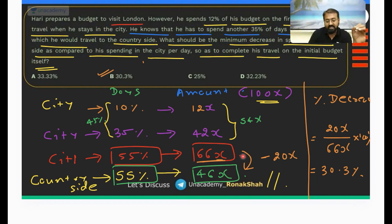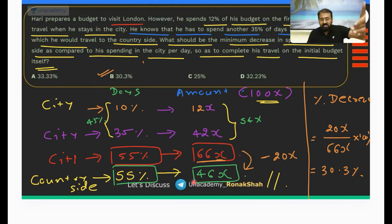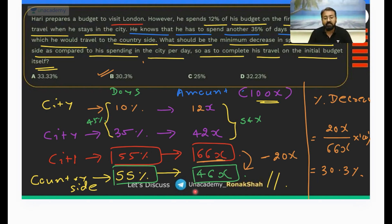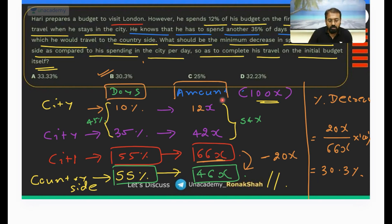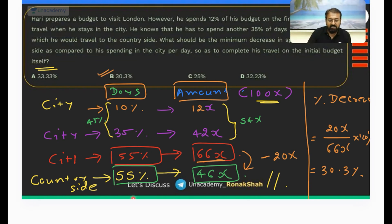For 55% of the days in the city he would need to spend 66x, while for 55% of the days in the countryside he can spend only 46x. So 66x to 46x — what is the percentage drop? It is 30.3% drop, and that is what they had asked. So we are done with the question. Once you've understood this, it becomes a pretty easy question.